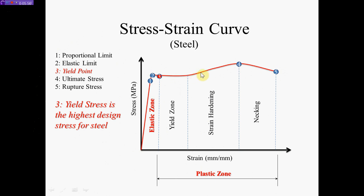Once the curve starts to deviate again, it's called strain hardening. In the yield zone, the load stays the same but the material is stretching without any real increase in load, then it hardens up and you have to increase the load — that's why you have a rise to the ultimate. Then the material starts to give way, the load starts to drop but the material is still stretching, and then it ruptures. So the three subzones are: yield, strain hardening, and necking.